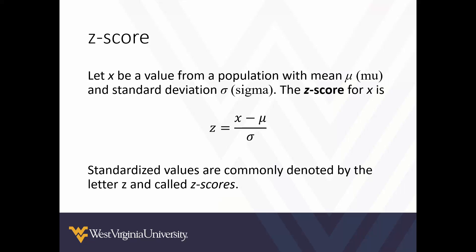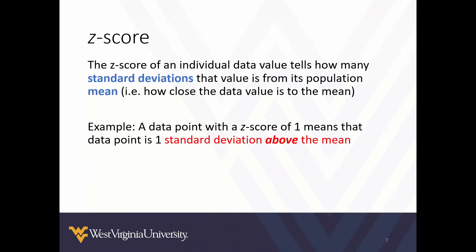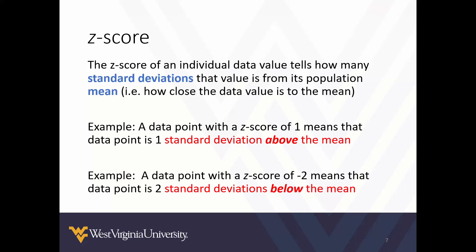Standardized values are commonly denoted with the letter z — we call these z-scores. The z-score tells us how many standard deviations a value is from its population mean. A data point with a z-score of 1 is one standard deviation above the mean; a z-score of negative 2 means two standard deviations below the mean. In statistics, positive and negative indicate directionality — above or below the mean — not good or bad.